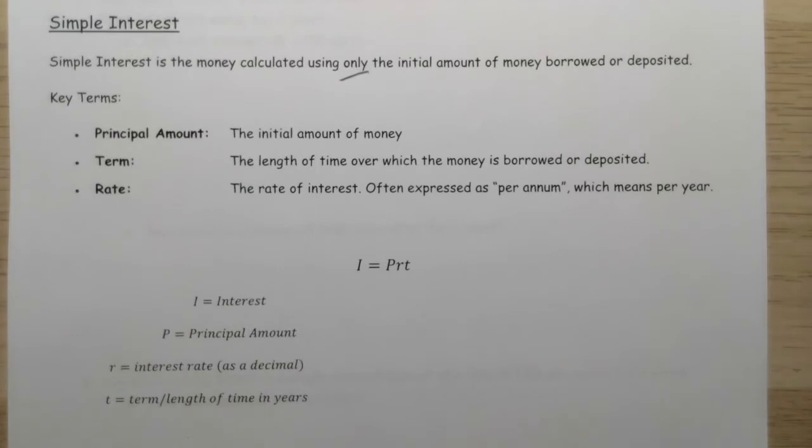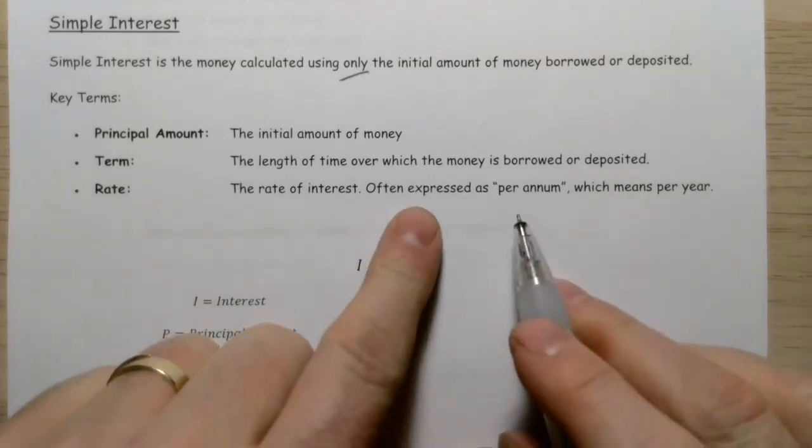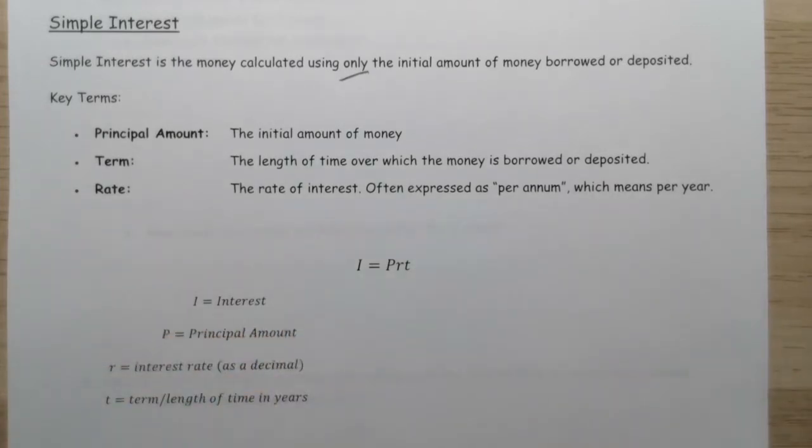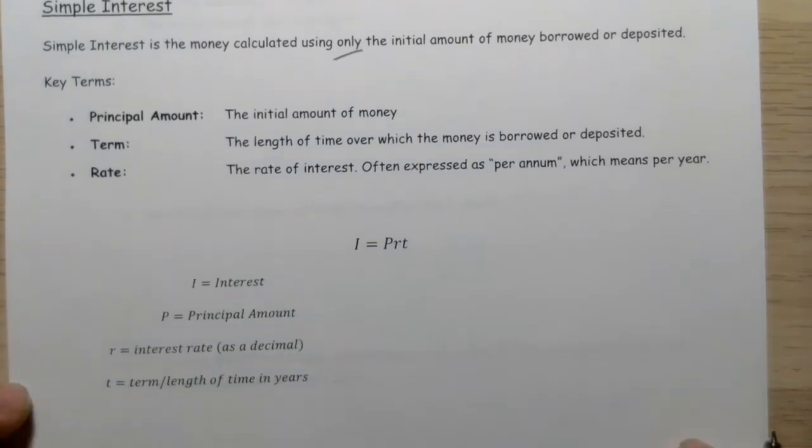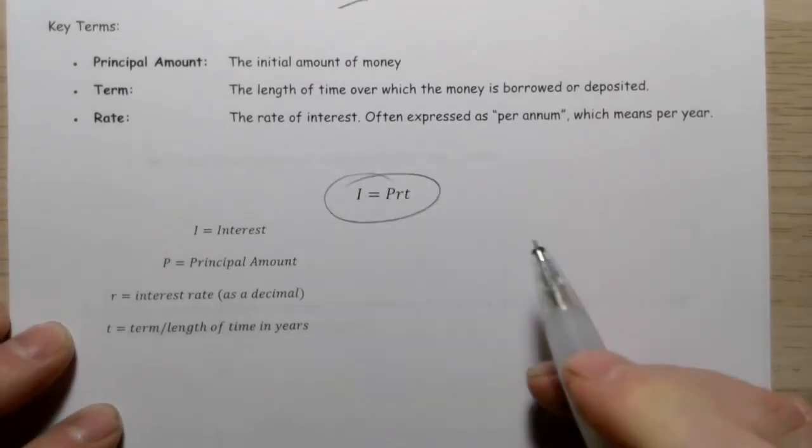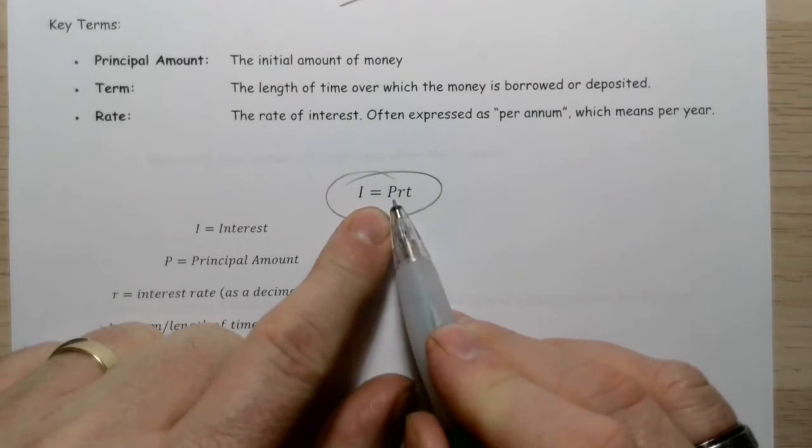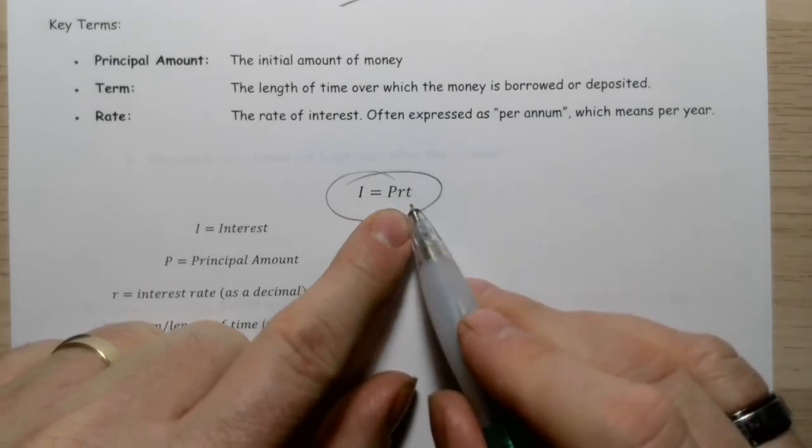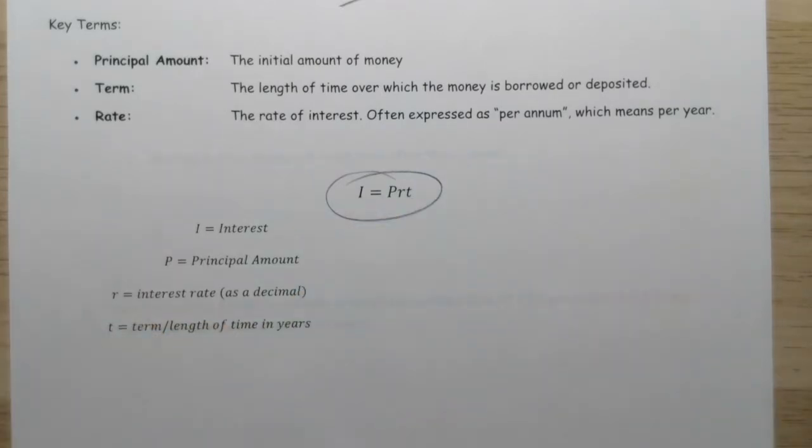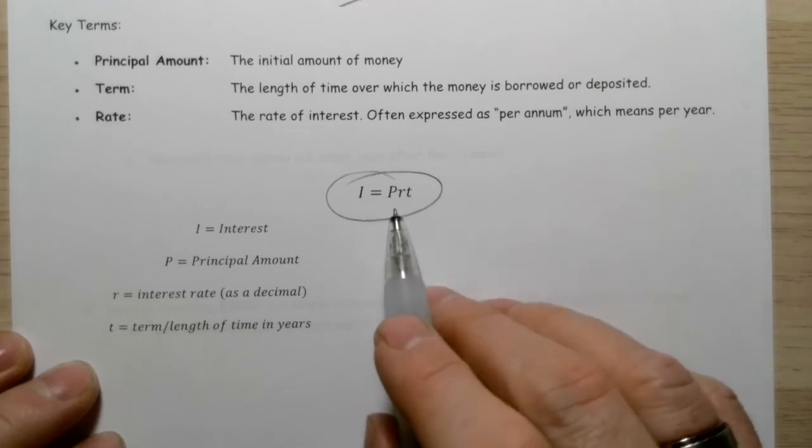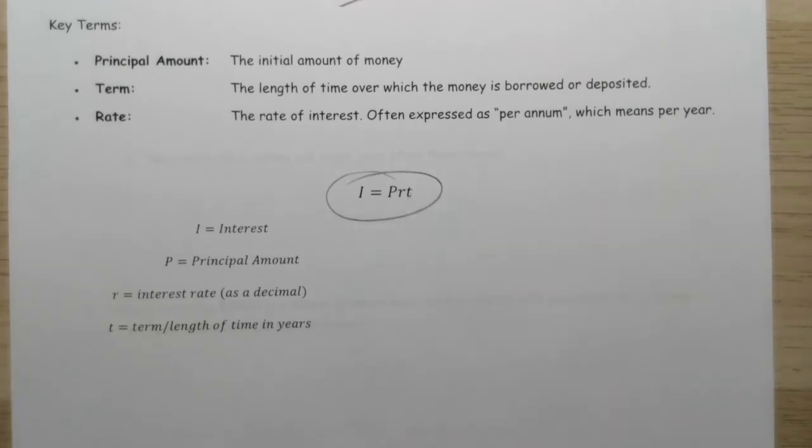The rate is the interest rate, the percentage of the total that you're going to be given. You'll often see it as a per annum interest rate, which means per year. Often we're going to have to adjust that time to fit whatever time frame we're working with. The formula is simple interest equals the principal multiplied by the rate times the time: I = PRT.